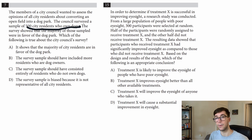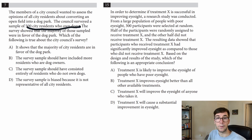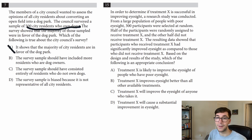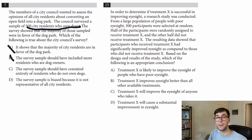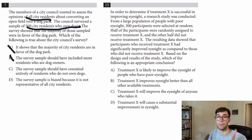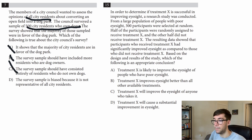They only sampled dog owners, meaning we can only apply these results to dog owners. Answer A — 'it shows that the majority of city residents are in favor of the dog park' — no, it shows the majority of dog owners are in favor, so not A. Answer B — 'the survey sample should have included more residents who are dog owners' — they're all dog owners, we don't need more, so not B. Answer C — 'the survey should have consisted entirely of residents who did not own dogs' — we want opinions of all city residents, so we need people with and without dogs, making C wrong. That leaves D by default: 'the survey sample is biased because it is not representative of all city residents' — that's true, it's only representative of dog owners.